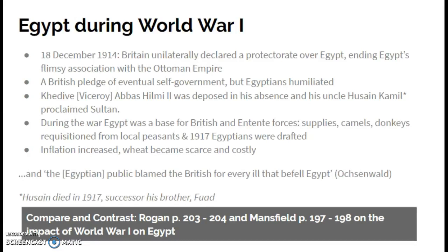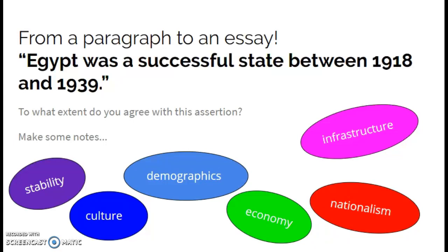The two books I'm referring to — Eugene Rogan's history of the Arabs and Mansfield's history of the Middle East — are available in the Google Drive folder. They present slightly different ideas about how World War One impacted Egypt, but as you can see from the quote from William Oxenwald, the Egyptian public blamed the British for everything that went wrong as a result of the First World War. However, by 1939 there's perhaps a feeling that Egypt is getting better, with improving government stability through Anglo-Egyptian treaties and the emergence of a parliamentary democracy.